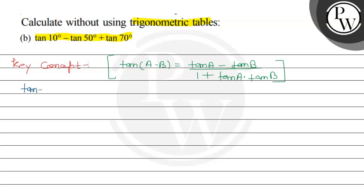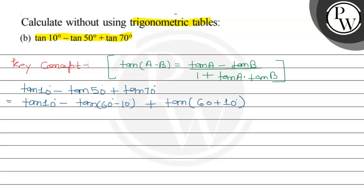The question is tan(10°) - tan(50°) + tan(70°). Here I will use the identity — in place of tan(a - b), we can apply the a minus b formula for tan(60° - 10°) to rewrite tan(50°).